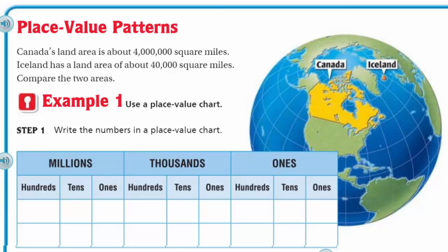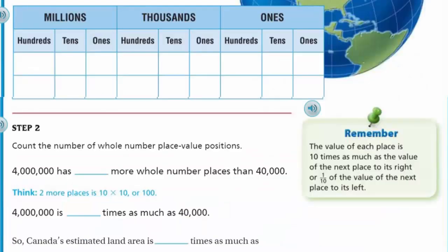Canada's land area is about 4 million square miles. Iceland has a land area of about 40,000 square miles. Compare the two areas. Okay. Well, right away we can see that Canada's land area is a lot more than Iceland. Example one says use a place value chart. It says write the numbers in a place value chart.